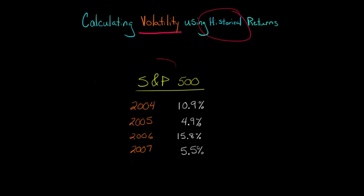So let's say that you have the S&P 500 or some other stock market index, and you want to know what is the volatility over a certain period of time. Let's take the S&P 500 from 2004 to 2007. You've got the annual return, so it's 10.9% in 2004, going through 2007 where it's 5.5%.